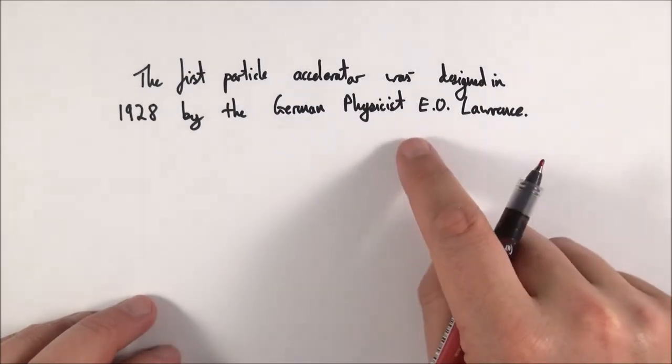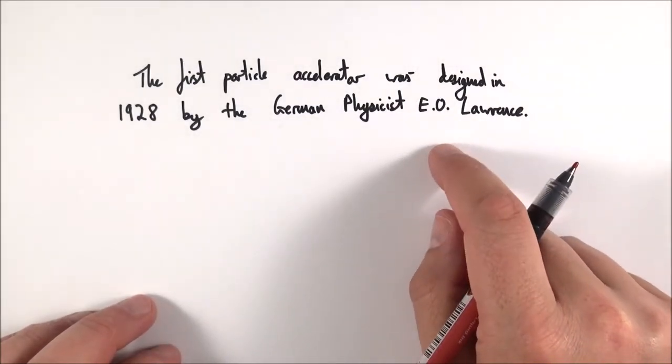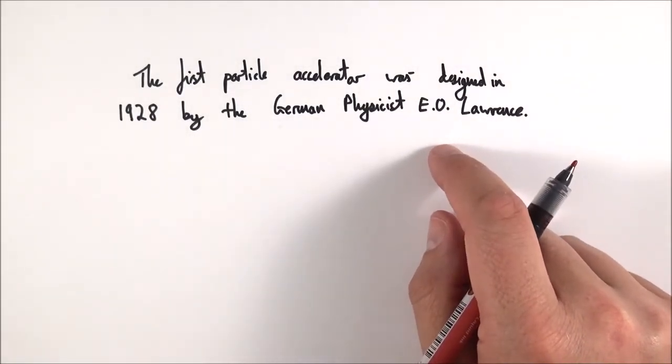So in 1928 there's this German physicist called E.O. Lawrence. He ran out of a library shouting I'm going to be famous because he'd invented and actually made a prototype of this model of the first particle accelerator.